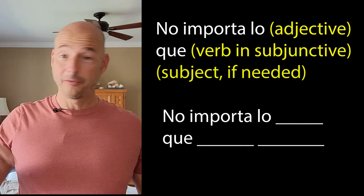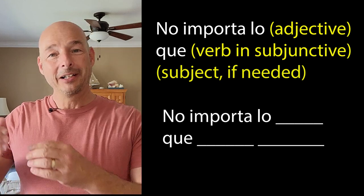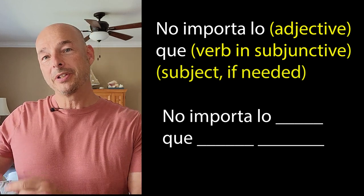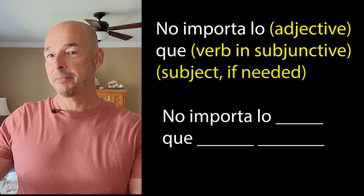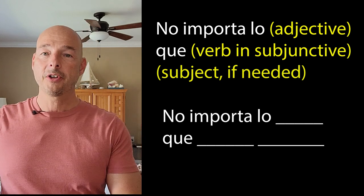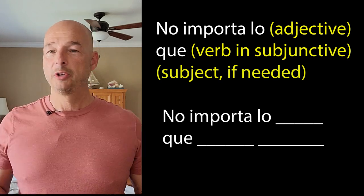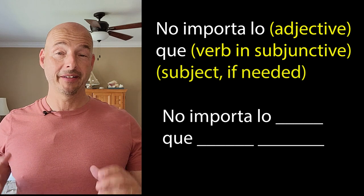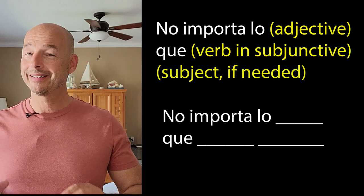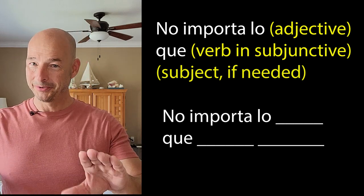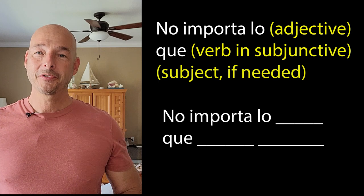In this formula — construction, whatever you want to call it — it'll always use the present subjunctive in this box. Always. So next blank over, you're going to put the subject. You may already be like, okay, this is getting really complex, I'm never going to get this. Don't worry, you're going to get it.